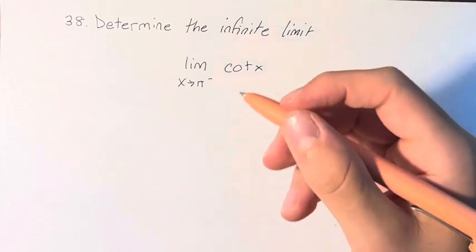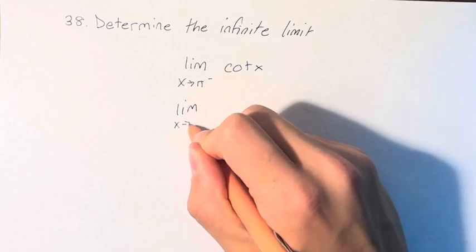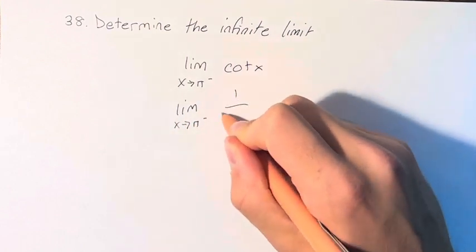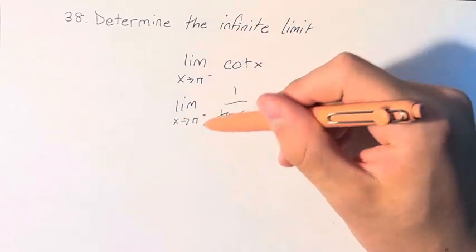So cotangent is 1 over tangent. So this is really the limit as x approaches pi from the left of 1 over tangent of x. Now, what does tangent approach as x approaches pi?